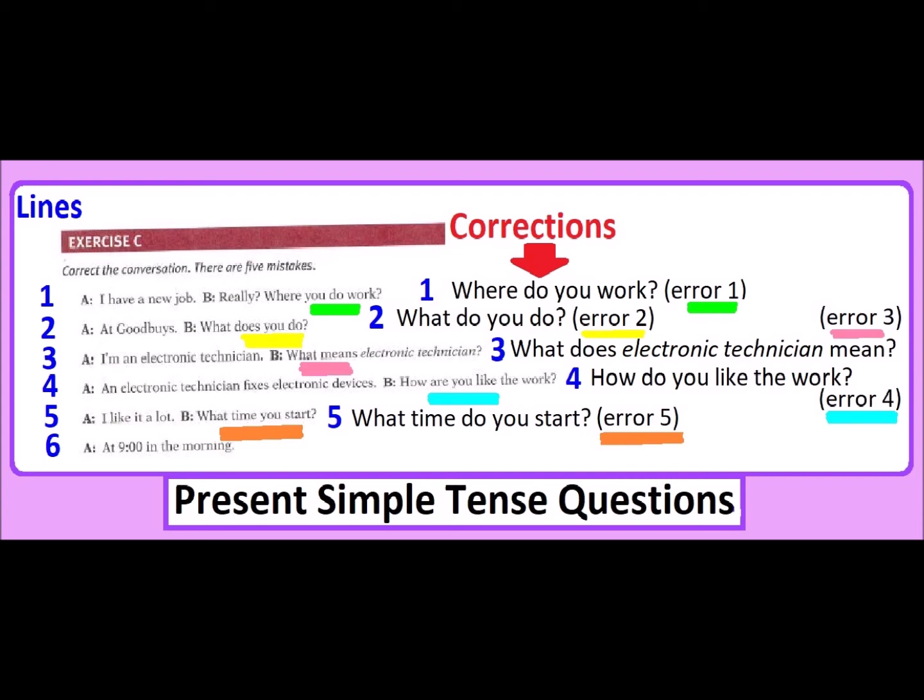This is the dialogue between A and B person. They have all A's here for some reason. I even didn't notice that in the book they have all A's. A and B. So we'll start the dialogue: 'I have a new job.' 'Really? Where do you work?' 'At Goodbyes.' Goodbyes is the name of the store.